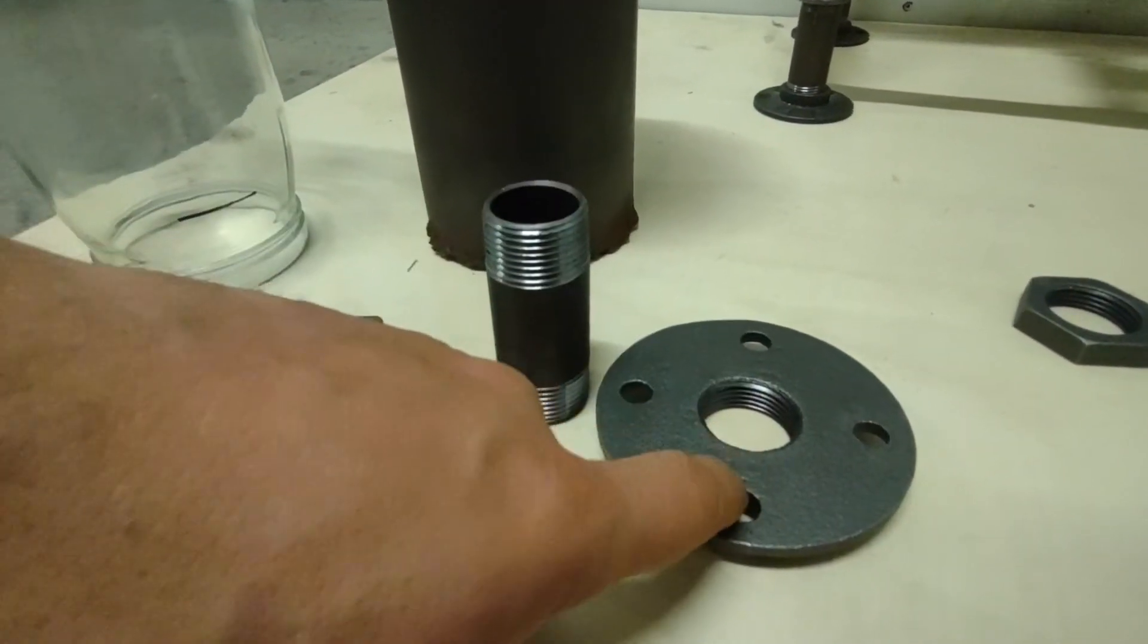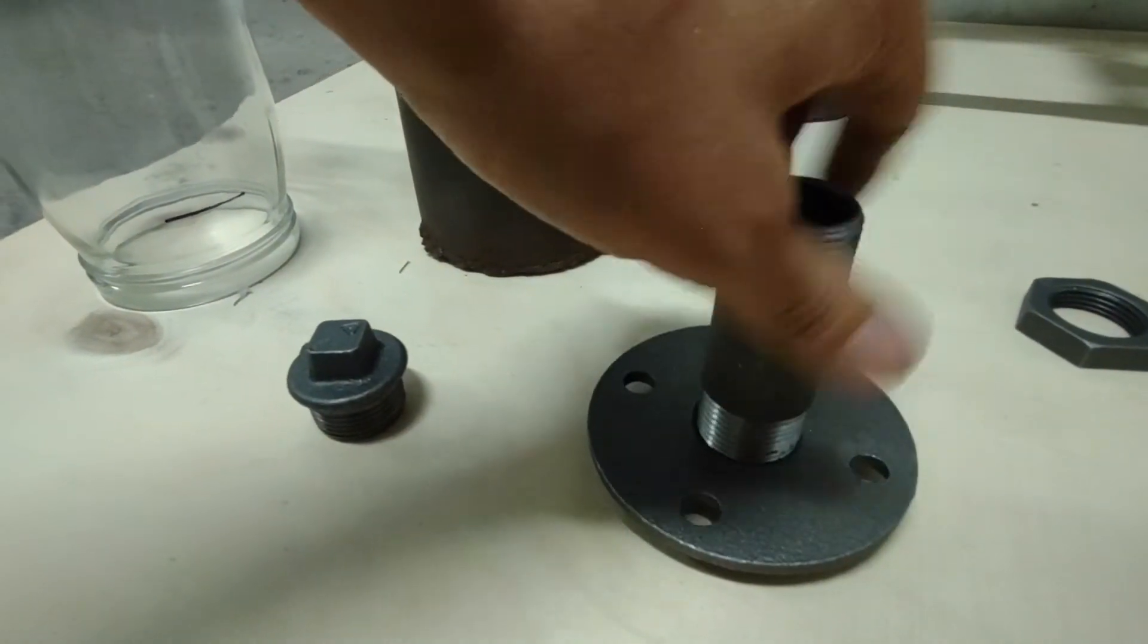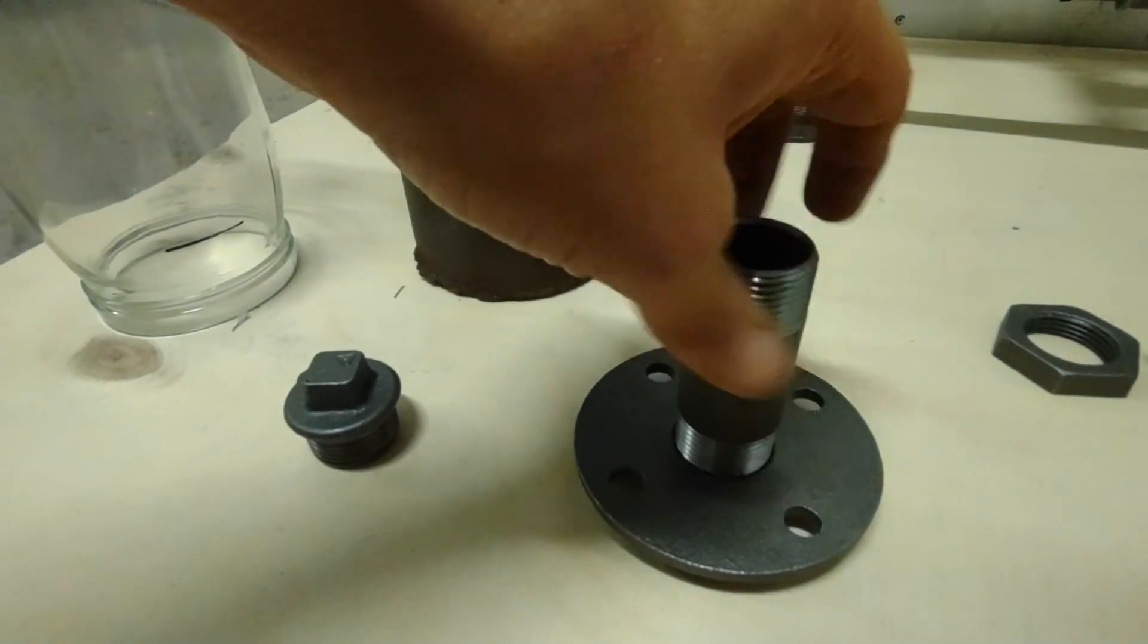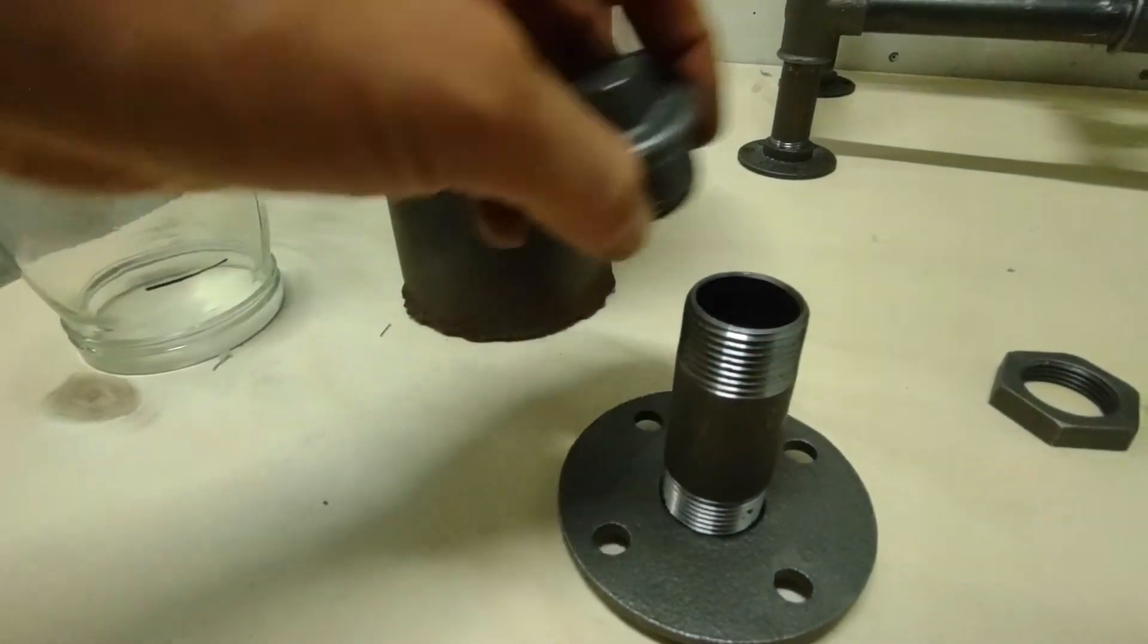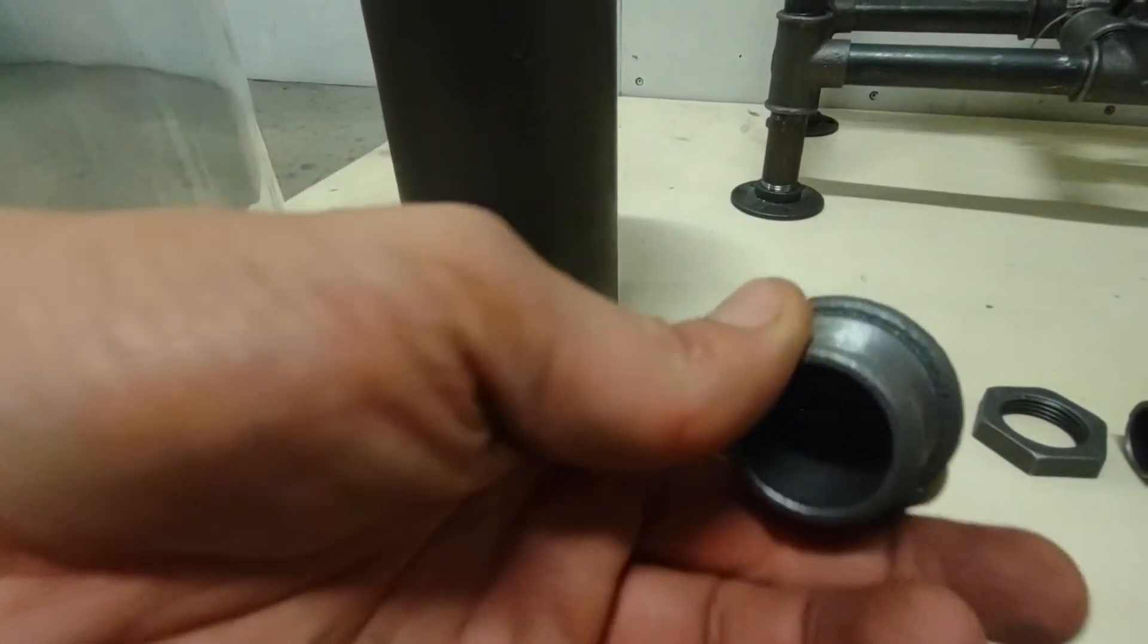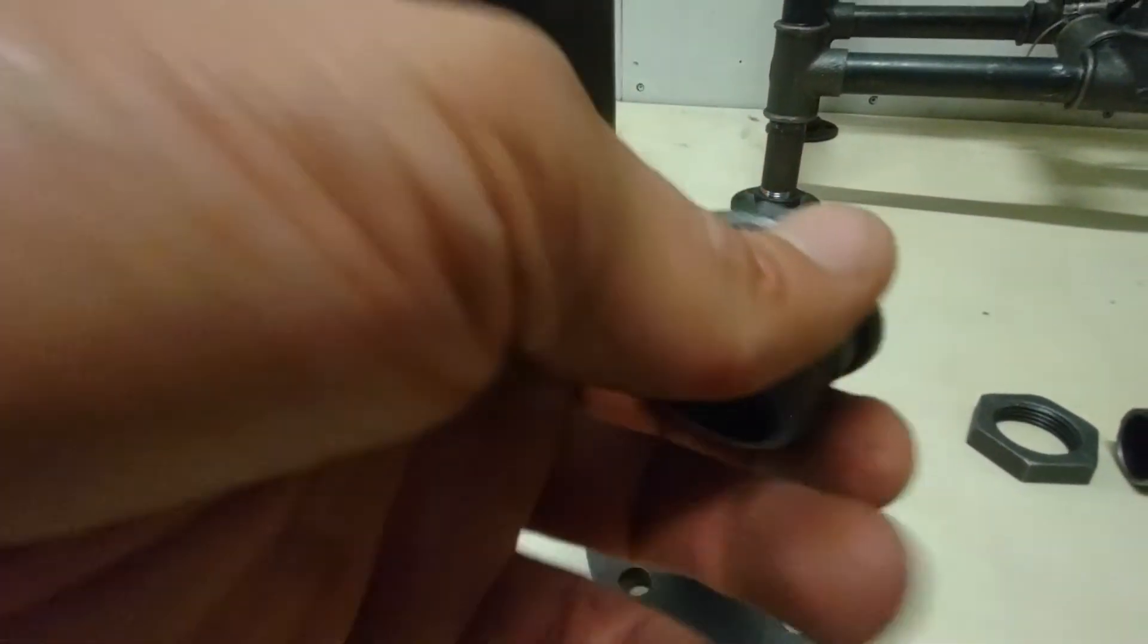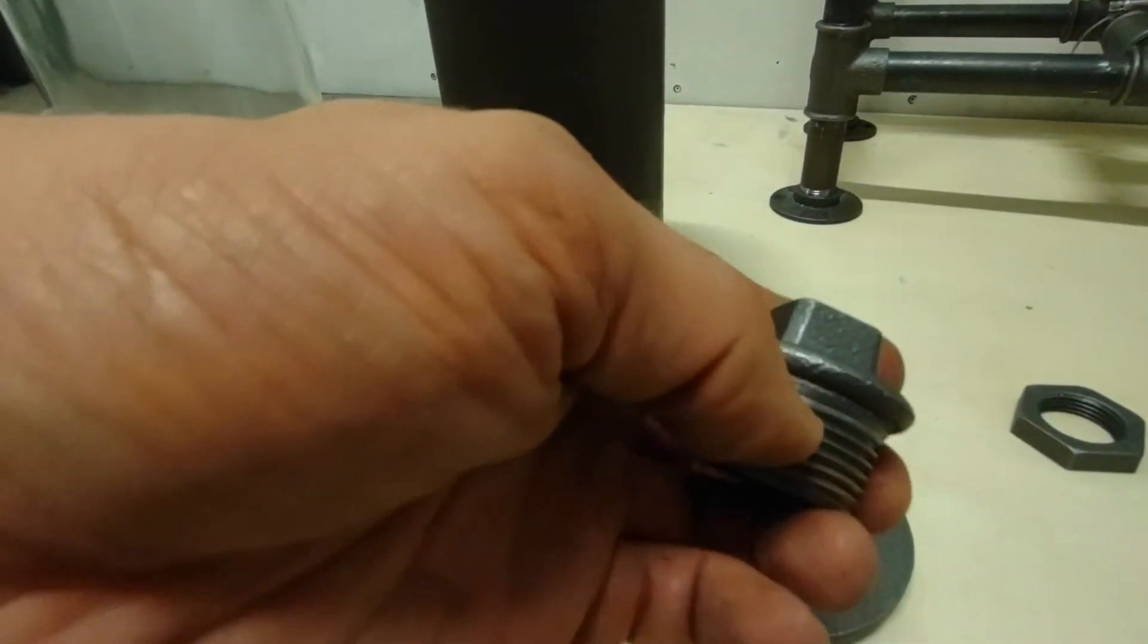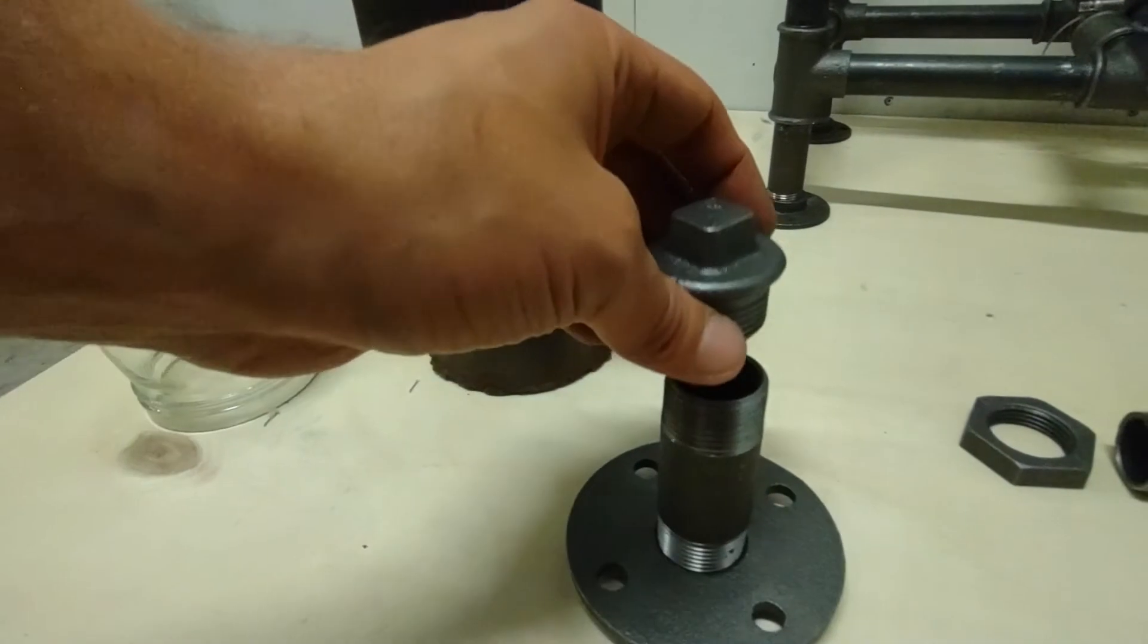Into this steel flange I will screw in this short pipe. On the top there will be this steel cork which I will probably cut the thread from, so it will be like that.